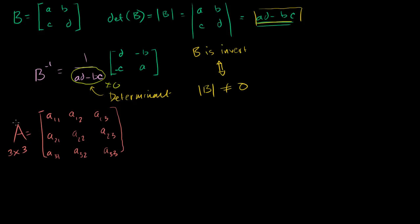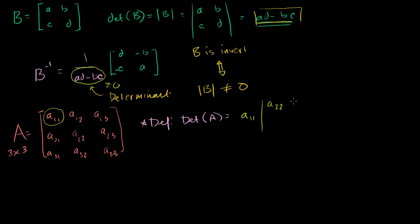I'm going to define the determinant of this 3 by 3 matrix A. This is a definition, and it's a little bit convoluted, but you'll get the hang of it. In the next several videos we're going to do a ton of determinants so it becomes second nature. It equals the first row entry A 1,1 times the determinant of the matrix you get if you eliminate that entry's column and row — so times the determinant of the matrix A 2,2, A 2,3, A 3,2, A 3,3. That's our first term. The next entry is going to be a minus, so you have minus A 1,2.